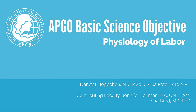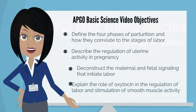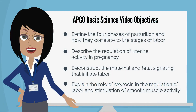Hello and welcome to this APCO Basic Science Objective video about the physiology of labor. The objectives of this video are: define the four phases of parturition and how they correlate to the stages of labor, describe the regulation of uterine activity in pregnancy, deconstruct the maternal and fetal signaling that initiate labor, and explain the role of oxytocin in the regulation of labor and stimulation of smooth muscle activity.